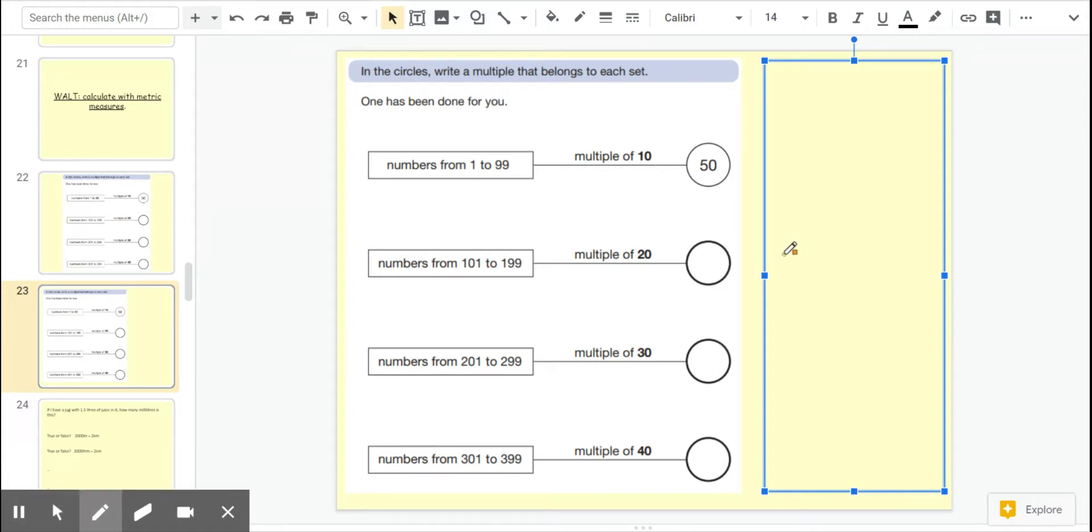Okay, so looking at multiples of 20, we know that 100 is a multiple of 20. So we should have 120 is a multiple, 140, 160, and 180, all falling within the bracket of 101 to 199.